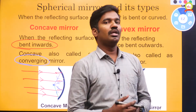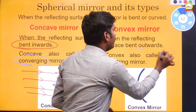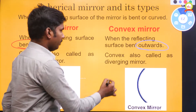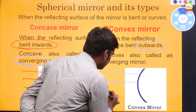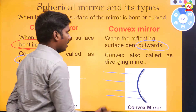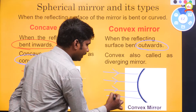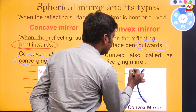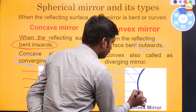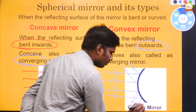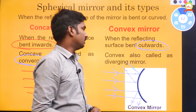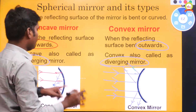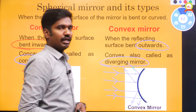The next type is the convex mirror. When the reflecting surface is bent outwards, those kinds of mirrors are called convex mirrors. Here also, a number of rays are sent towards the mirror as incident rays. After hitting the mirror, reflection takes place, but the rays move outwards in different directions. That is the reason we call the convex mirror a diverging mirror, and the concave mirror a converging mirror.